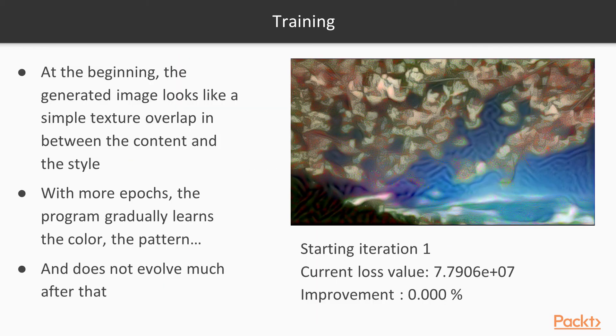But how does it work for the optimization step? So at the beginning this is what we have, our first iteration. So at the beginning the generated image looks like a simple texture overlap in between the content and the style. Okay so we have a current loss value.